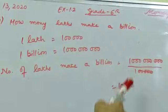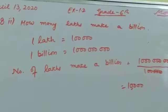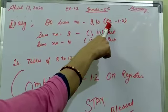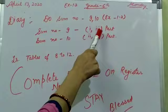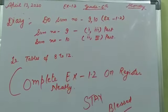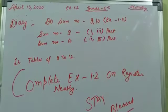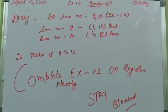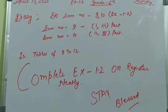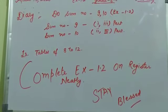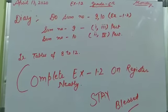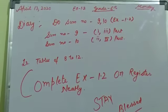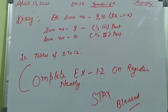10,000 lakhs make a billion. For diary work, do sum number 9 and 10 of exercise 1.2 — specifically sum 9 parts 1 and 3, and sum 10 parts 2 and 4. Also learn tables of 8 to 12. Complete exercise 1.2 on register neatly. Stay blessed — I will take a surprise test on any day this week on your test notebooks. Be honest, and after one or two days I will send you the answer sheets. Stay healthy and stay strong. Goodbye.